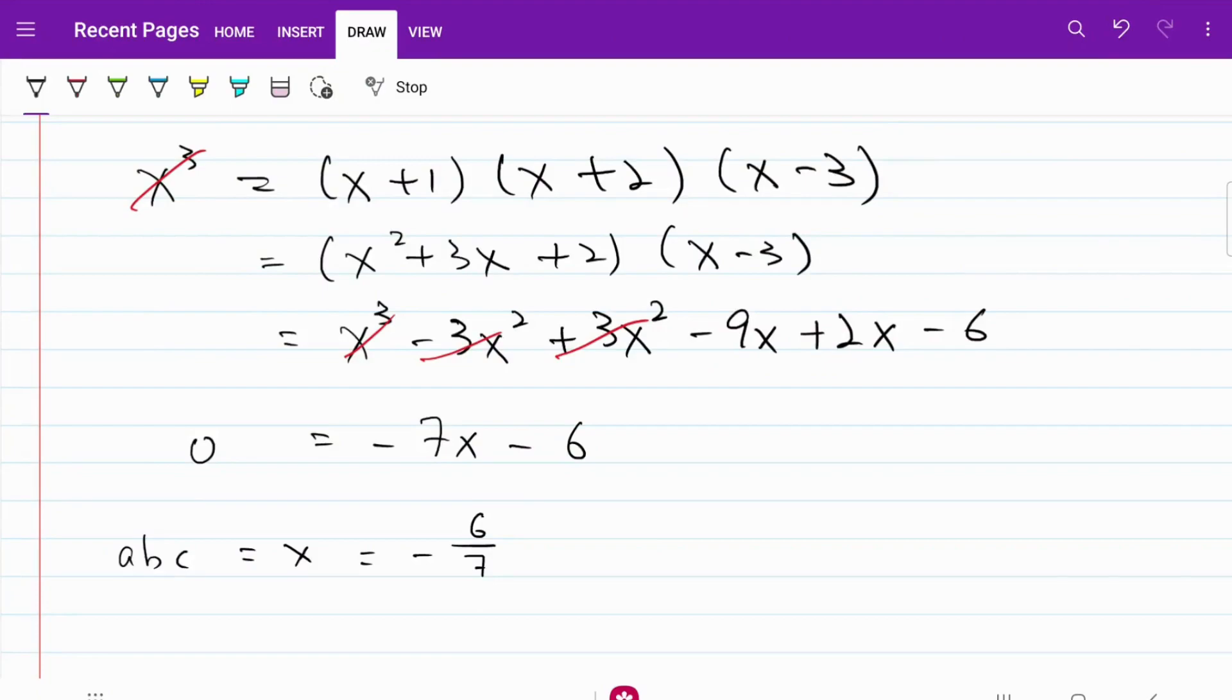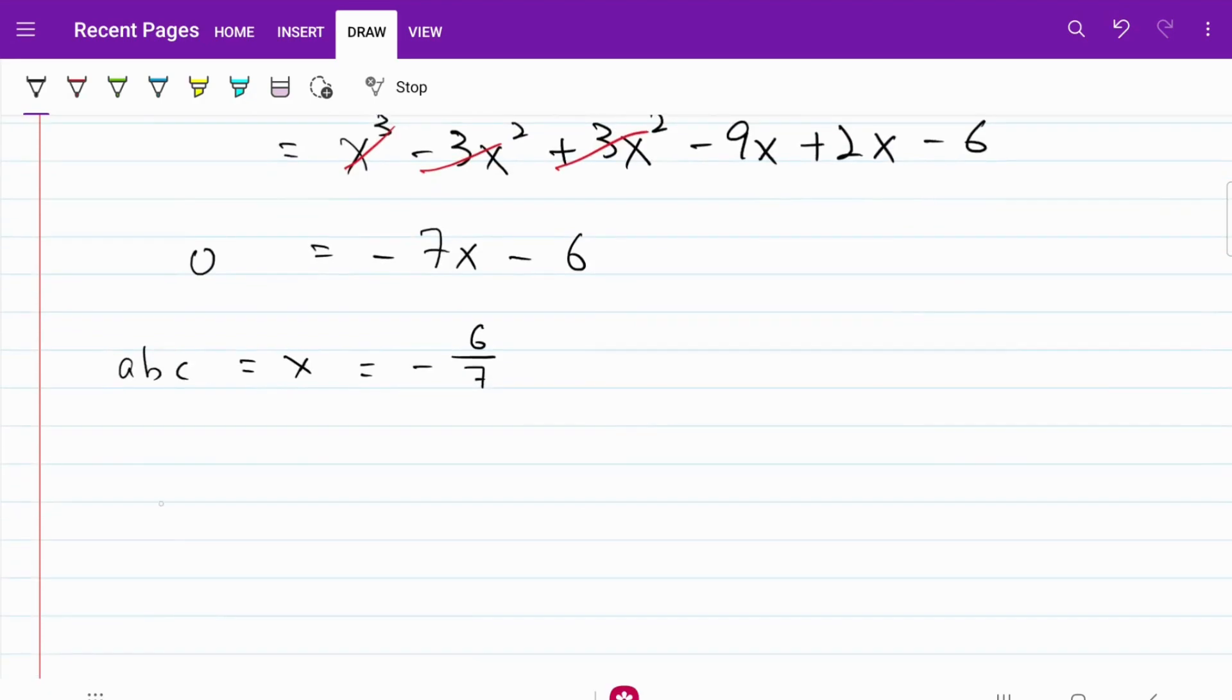Let's now try to solve for the individual value of a, b, and c. I have a cube is equal to one minus six over seven, which is equal to one over seven. Therefore, a is equal to one over the cube root of seven.